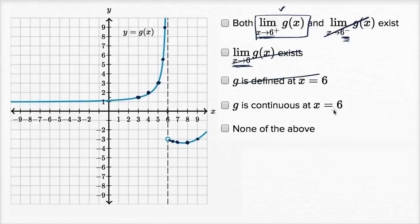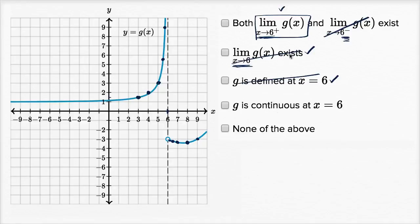Is g continuous at x equals six? It goes up to infinity then jumps back down, so it looks very discontinuous. More formally, in order for something to be continuous, the limit needs to exist at that value, the function needs to be defined at that value, and the value of the function needs to equal the value of the limit. Neither of the first two conditions are true, so the function cannot be continuous at x equals six. The only thing I can check here is none of the above.